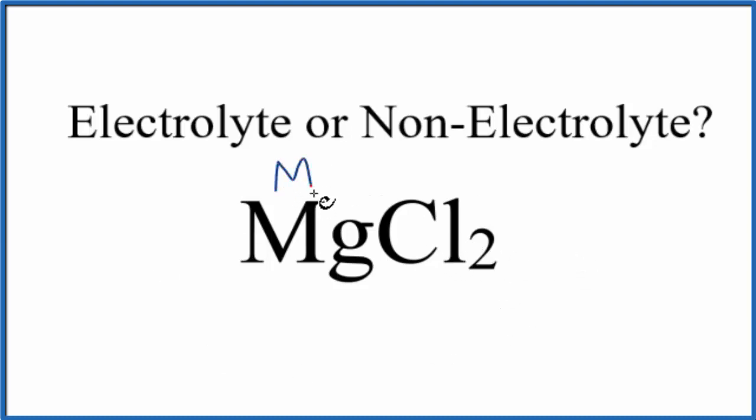Magnesium, that's a metal. Then chlorine, that's a non-metal. So we have a metal and non-metals.